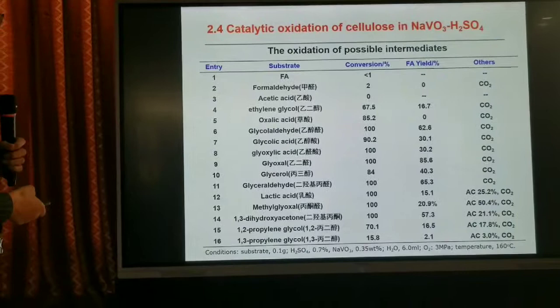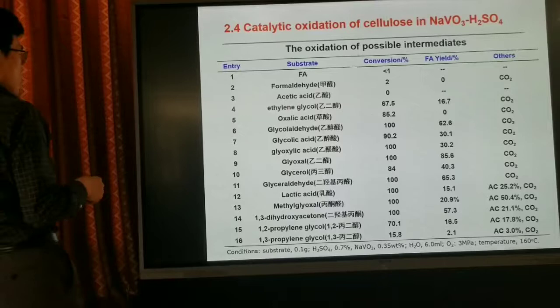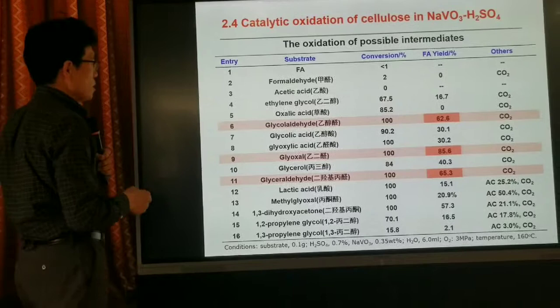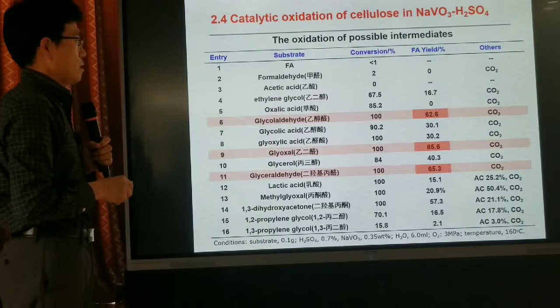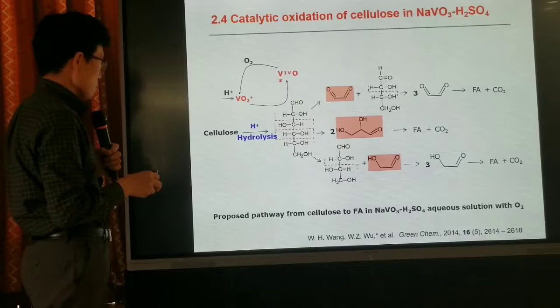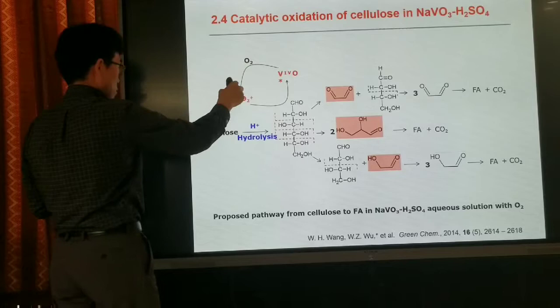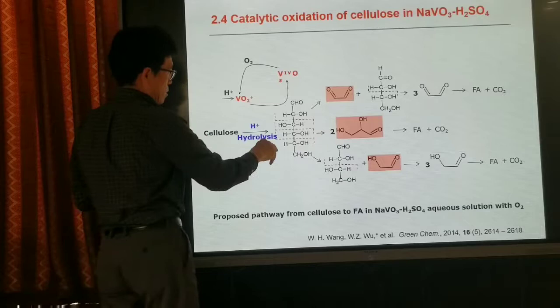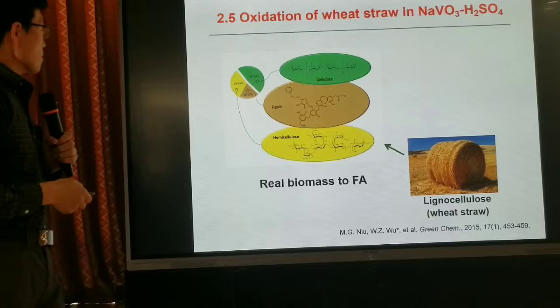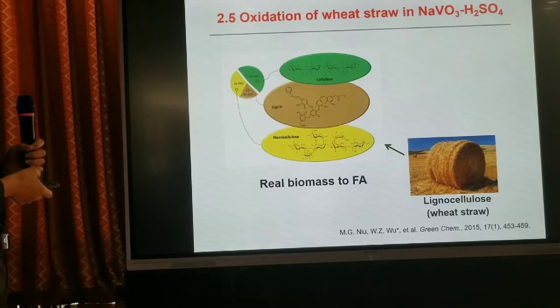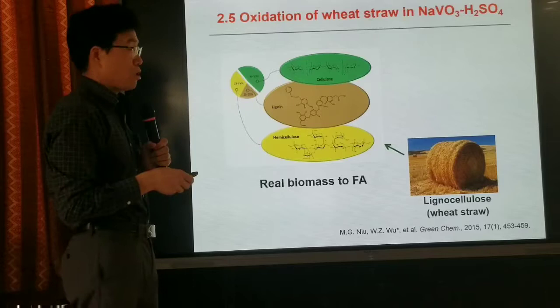We also studied the possible intermediates and conversion rates using different substrates. For the aldehyde substrate, the conversion rate is 100% and the yield of formic acid is more than 60%. So we propose a catalytic cycle: V4+ is oxidized to V5+, which then oxidizes the substrate. Cellulose is hydrolyzed to glucose, glucose is decomposed to intermediate compounds, and further oxidized to formic acid.